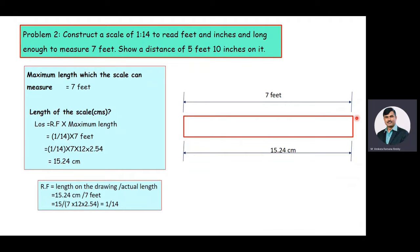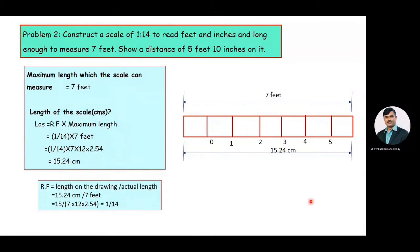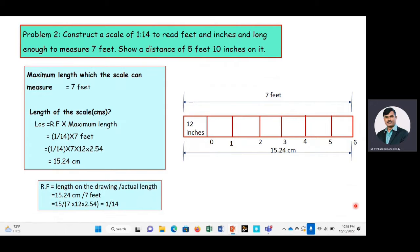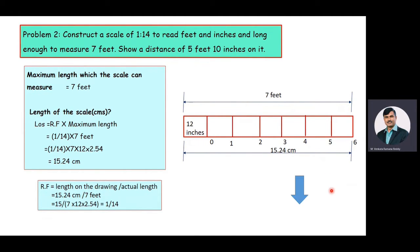The actual length is divided into 7 parts, and each part becomes 1 foot. The first main division is to be divided in terms of inches, since 1 foot equals 12 inches. With this basic information, we will start the construction of the plane scale.